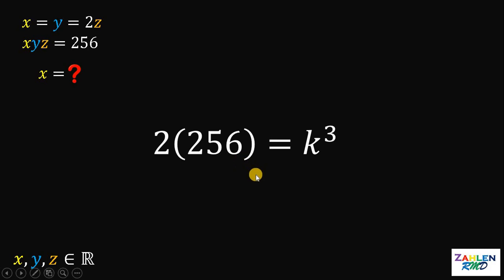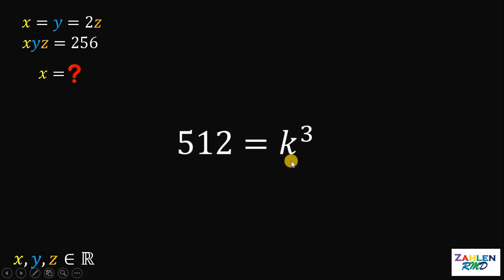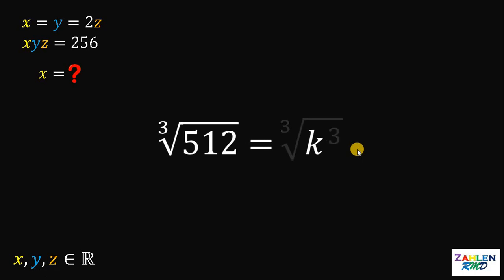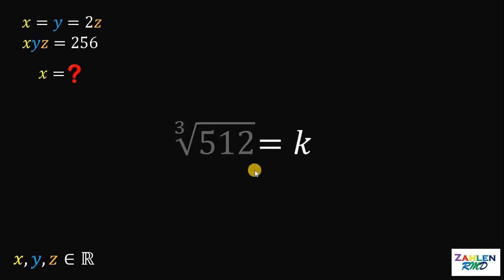Now, 2 times 256 will give us 512. To solve for the value of k, let's get the cube root on both sides. The cube root of k cubed is just k, and the cube root of 512 is just 8.